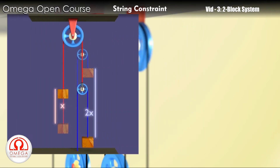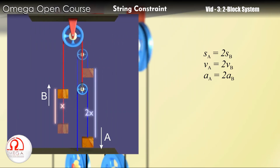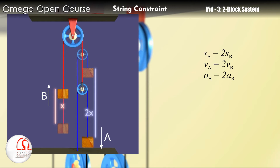Hence, the magnitude of displacement, velocity, and acceleration of the block on the right is twice the magnitude of displacement, velocity, and acceleration of the block on the left.